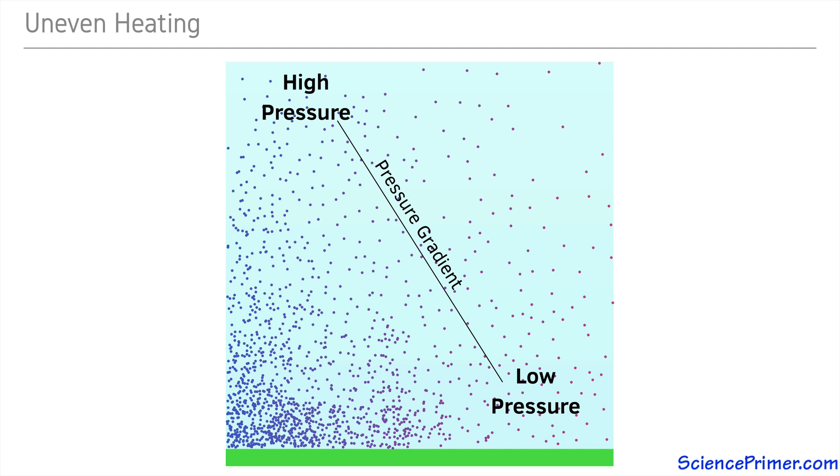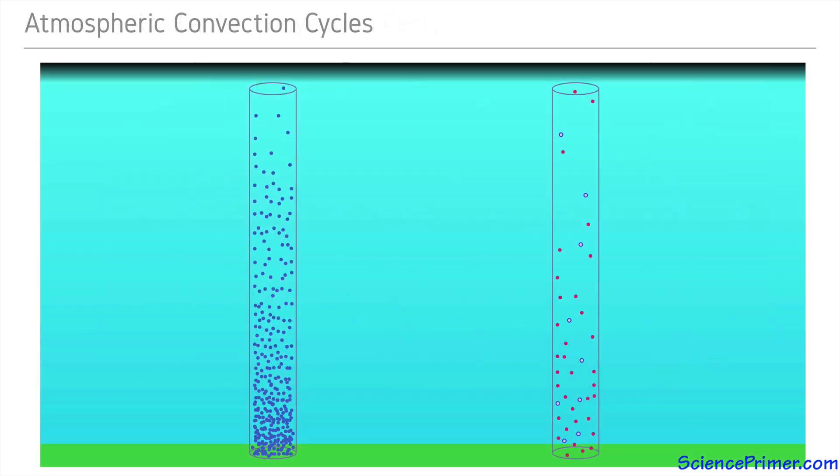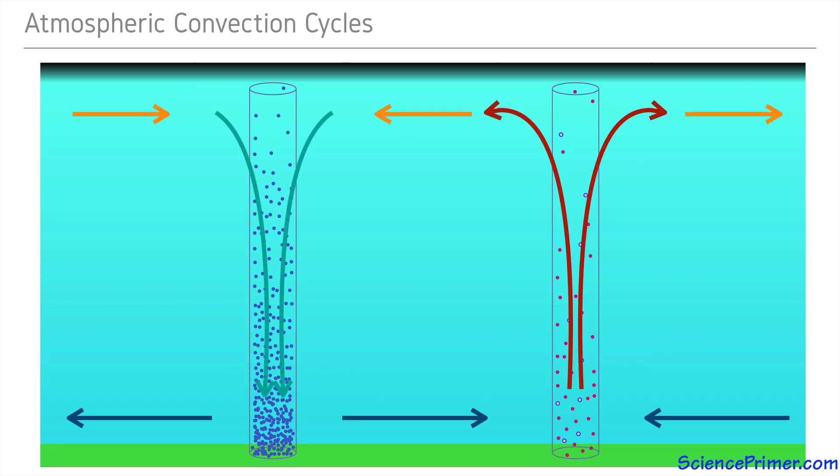This is similar to the smaller, more contained convection cycles present in a room heated from one side, where warm air rises from a heat source, moves across the ceiling, cooling as it goes. Once cooled, it sinks and the cool air returns along the ground towards the heat source. Although it is not as simple in the atmosphere because the system is more open, so the rising and falling air masses cause movement in many directions.